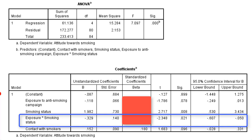Then we get the effect of the interaction variable, exposure by smoker. The unstandardized coefficient is minus 0.3, which is the difference in the slope for smokers with respect to the reference group, the non-smokers. So the slope for smokers will be minus 0.3 in addition to the minus 0.1 for non-smokers — the effect of exposure on attitude is clearly more negative. It's statistically significant at the 0.05 level, and the confidence interval for the difference between the slopes ranges from minus 0.61 to minus 0.05.